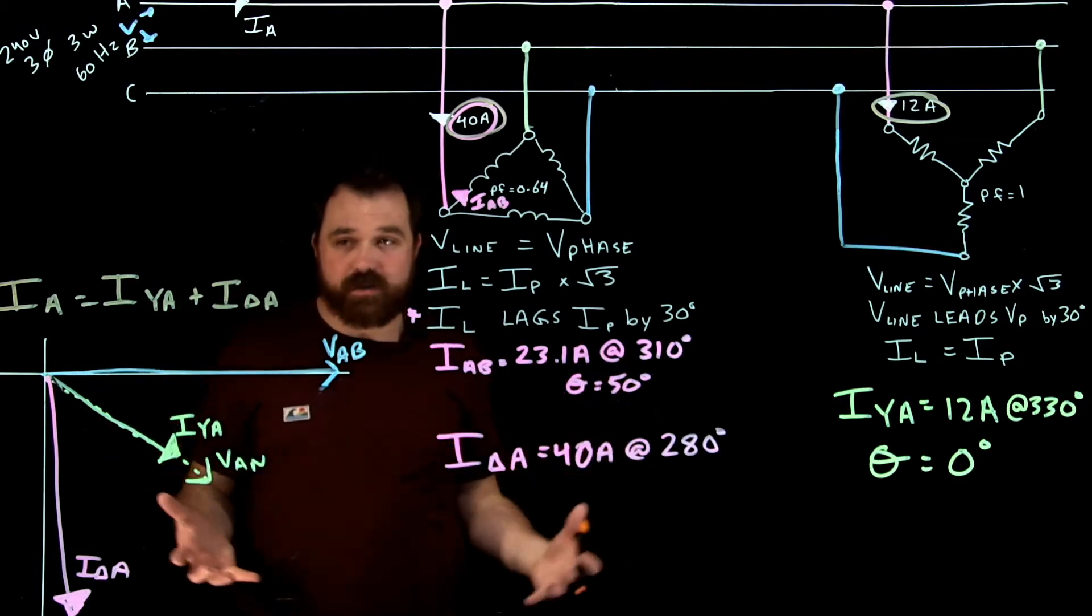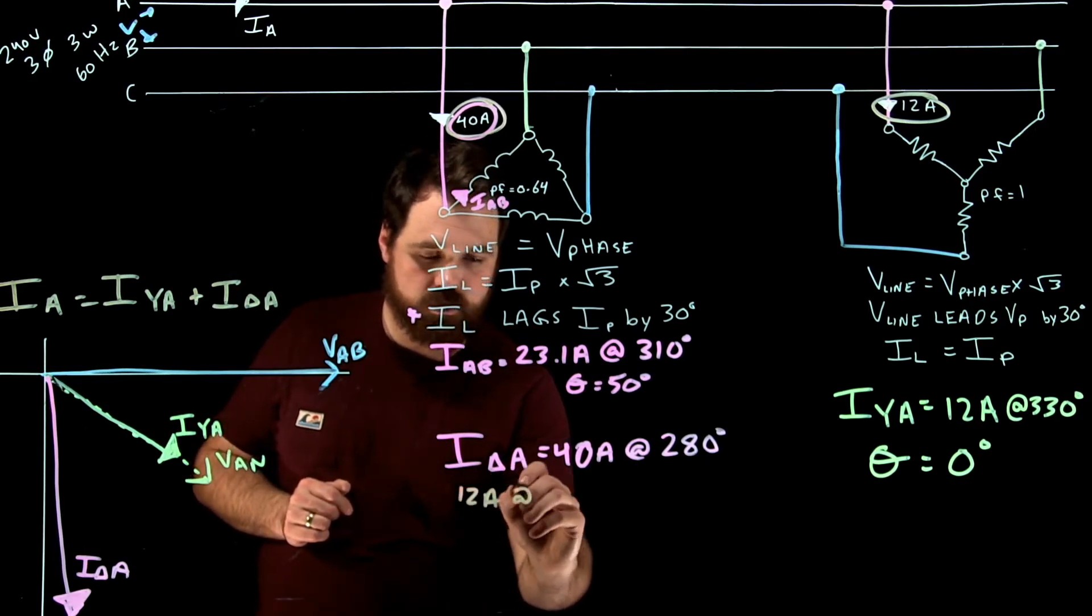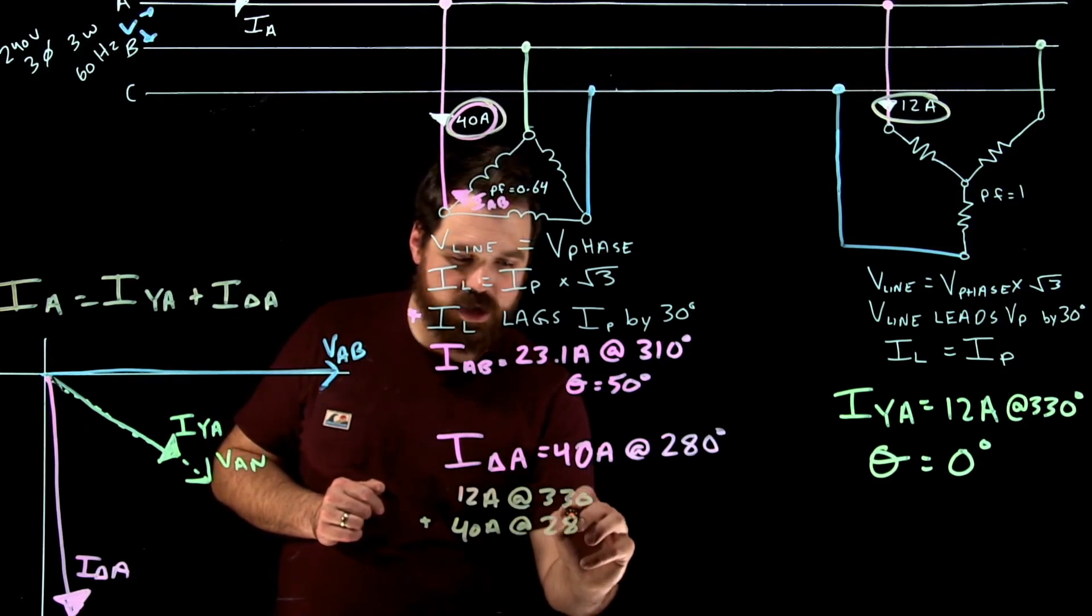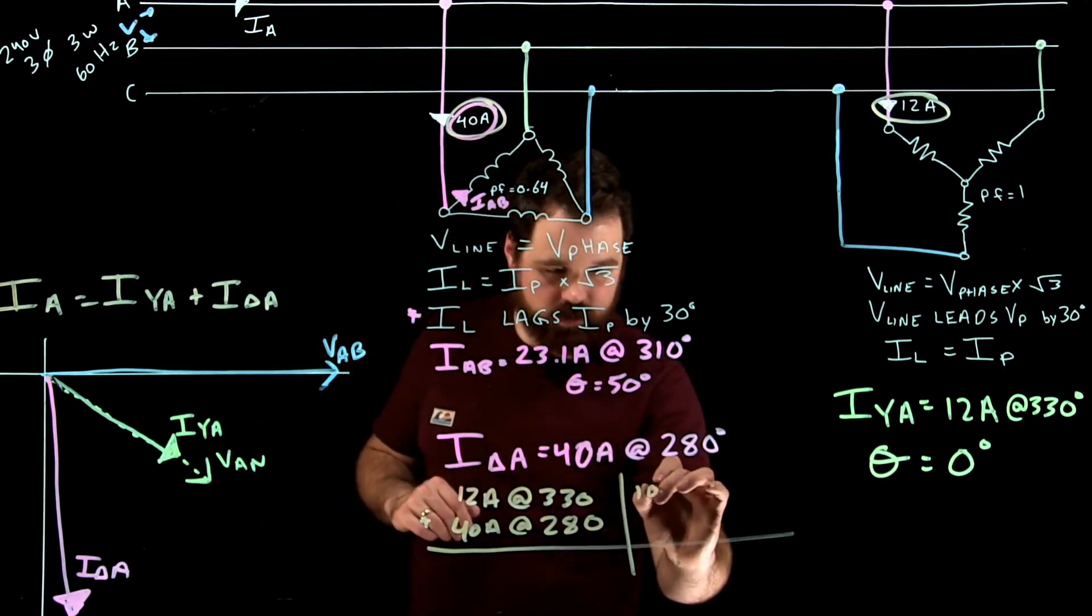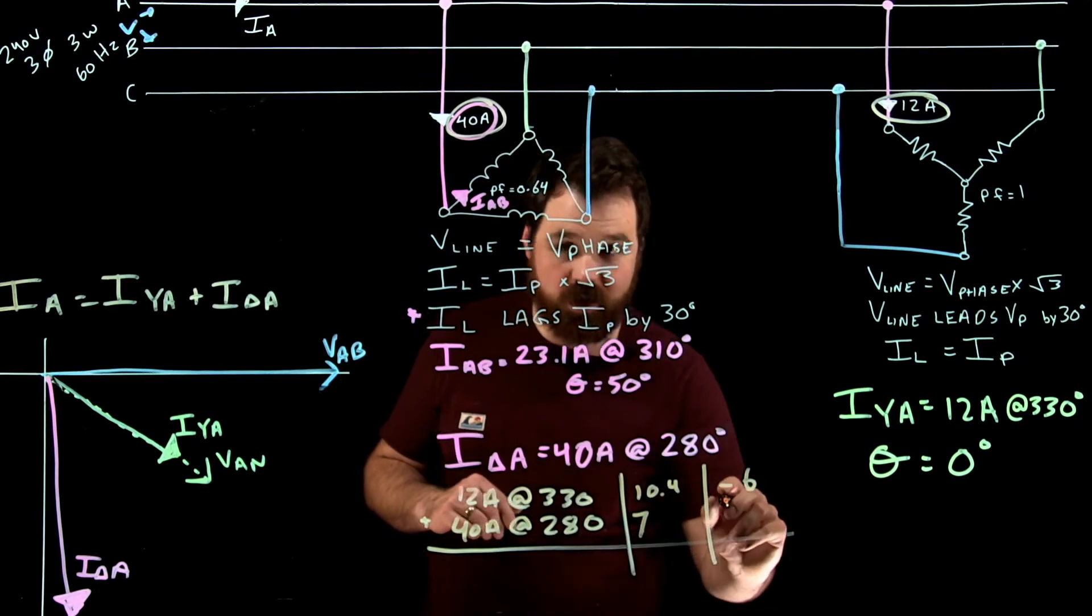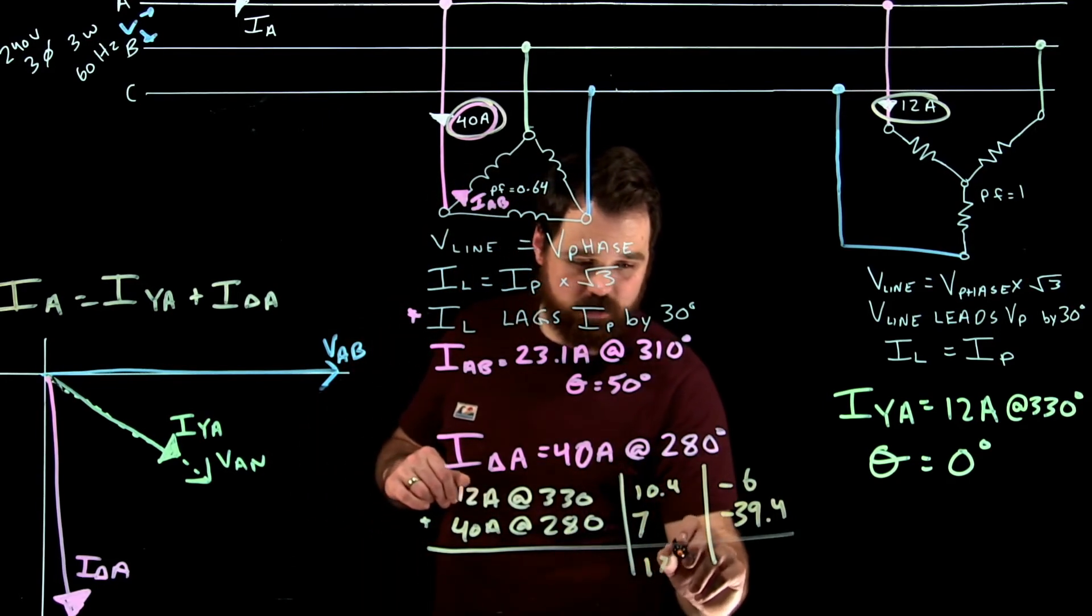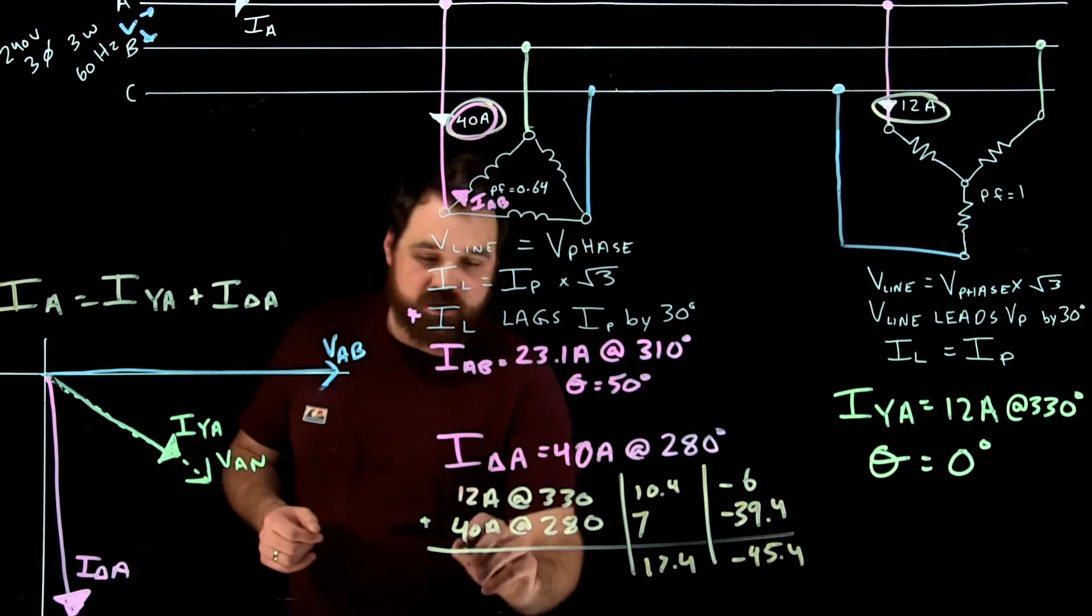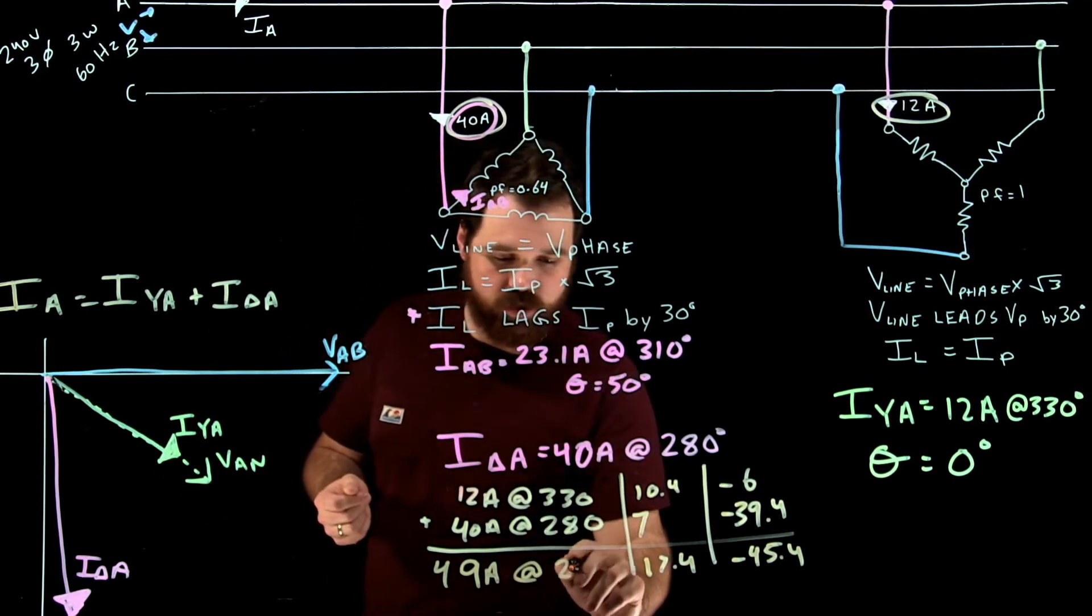So we end up putting that into an HV chart now. It's going to be 12 amps at 330 plus 40 amps at 280. And we'll run the numbers on that. So I got some numbers here. I got 10.4 and negative 6, 7 and negative 39.4. We add all those up. So we end up with 17.4 and negative 45.4, which ends up giving us around 49 amps. And when we do the calculation, we get it at around 290 degrees.